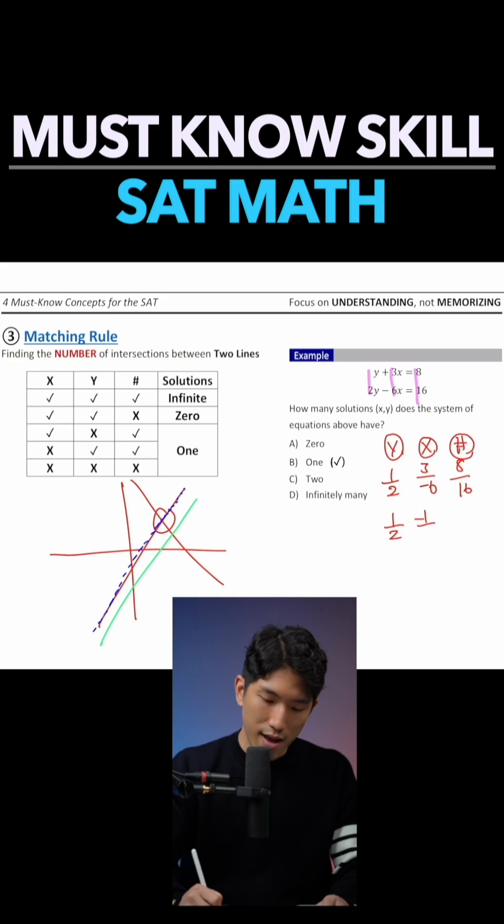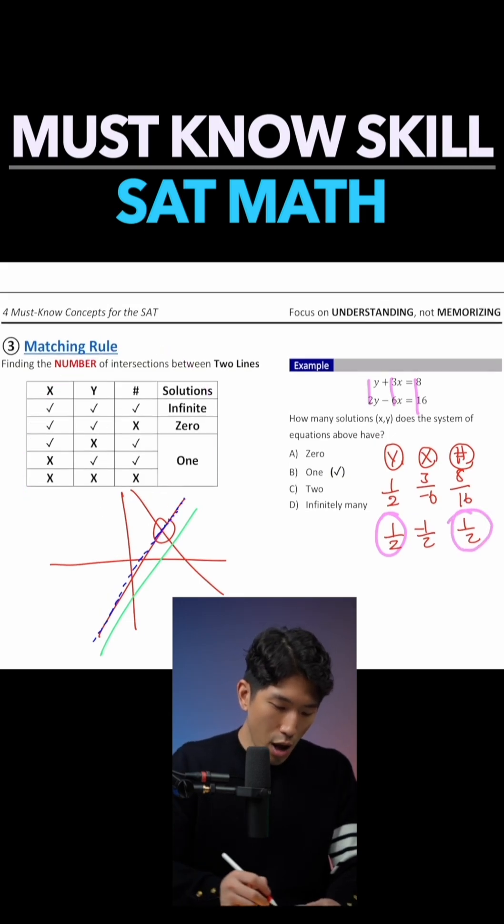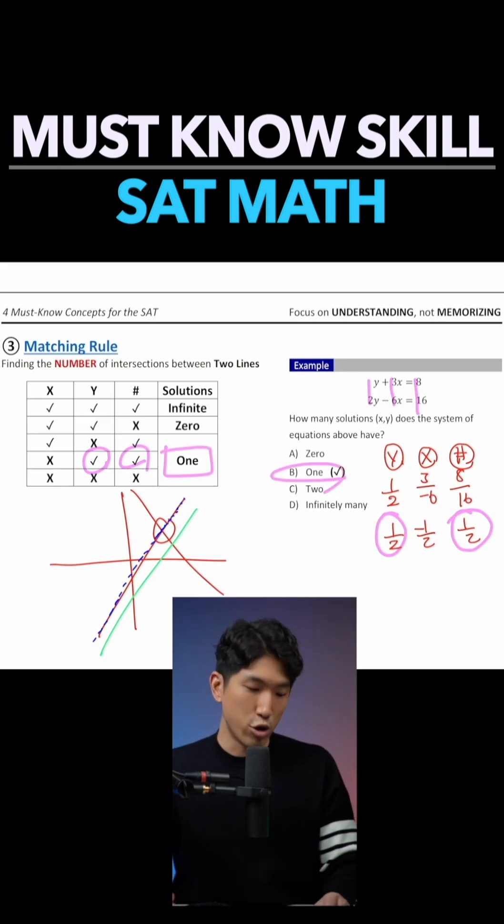If we simplify, we're going to get one half, negative one half, and one half. You see how the ratio of the y and the numbers are matching? If we go to the matching rule table, when the y and the number are matching, we simply have one solution, which means our answer is choice B.